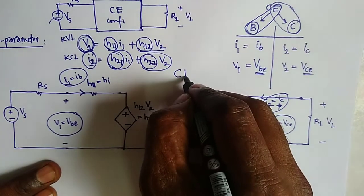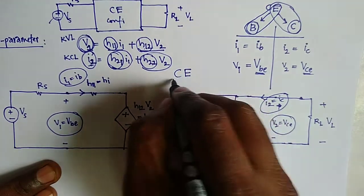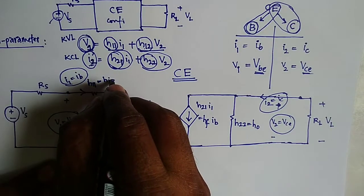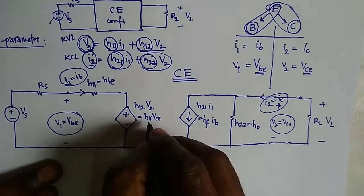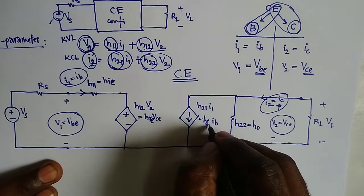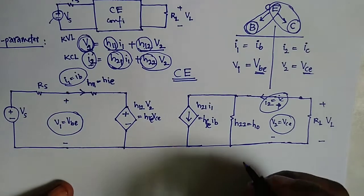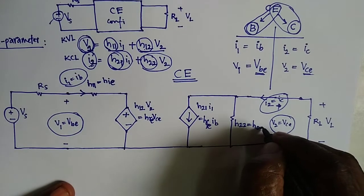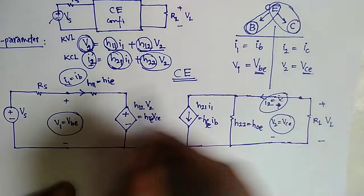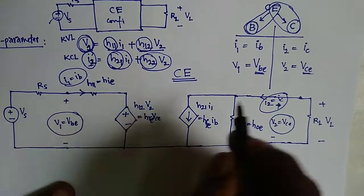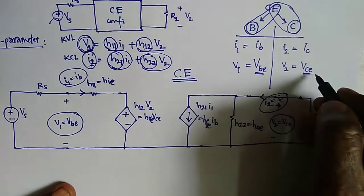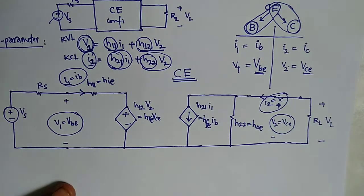In common emitter configuration, all H parameters are replaced as follows: H11 → HIE, H12 → HRE, H21 → HFE, H22 → HOE. Also, I1 = IB, V1 = VBE, I2 = IC, and V2 = VCE.